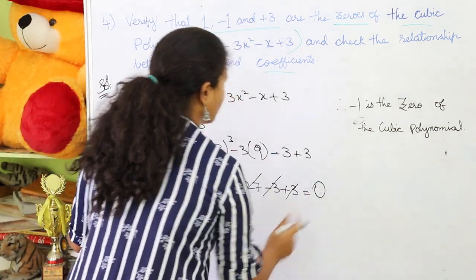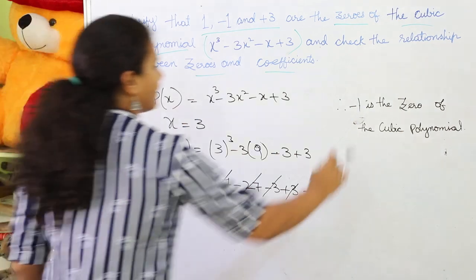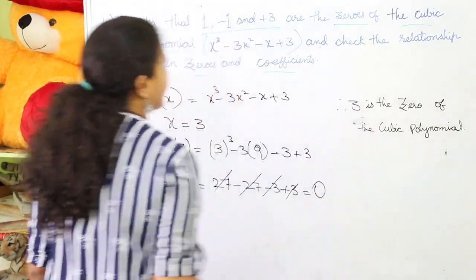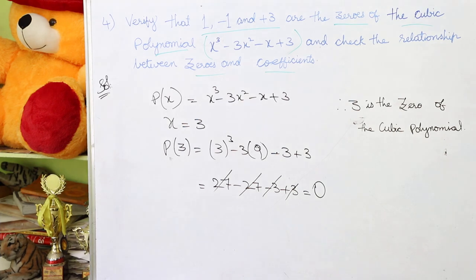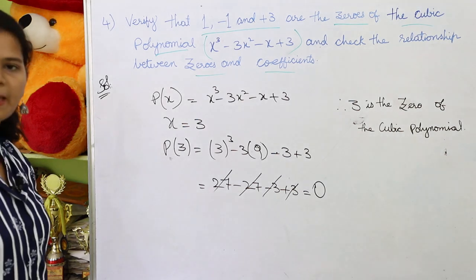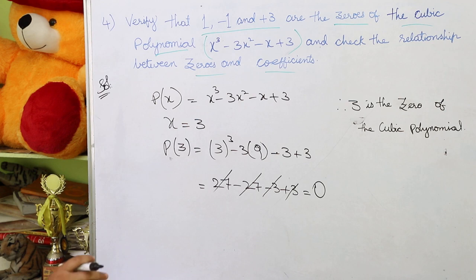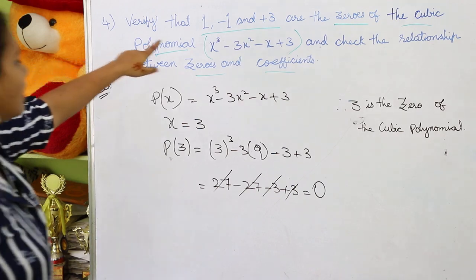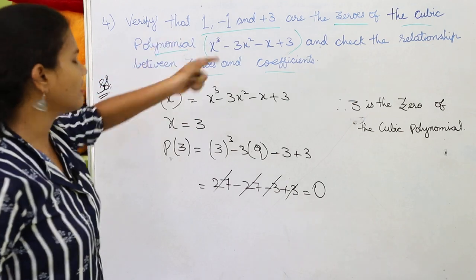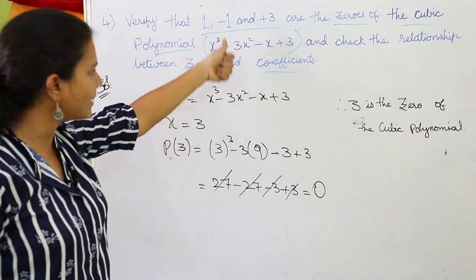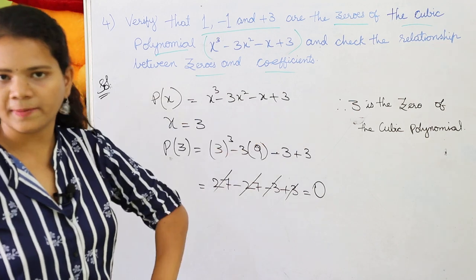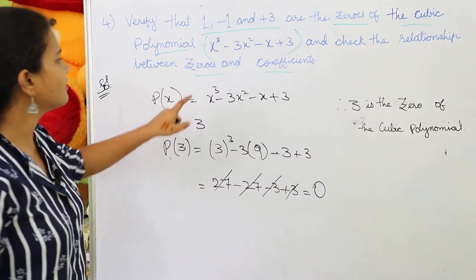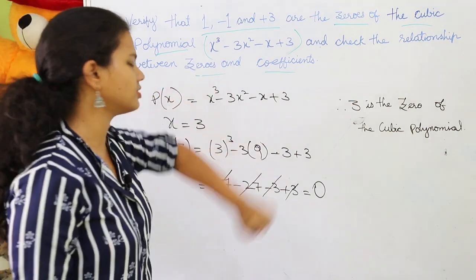Since p(3) = 0, therefore +3 is also a zero of the cubic polynomial. We have now verified that +1, -1, and +3 are all zeros of the cubic polynomial. Now we move to the second part: check the relationship between zeros and coefficients.